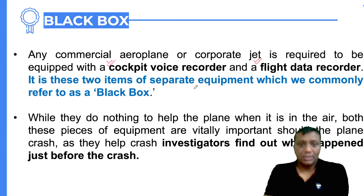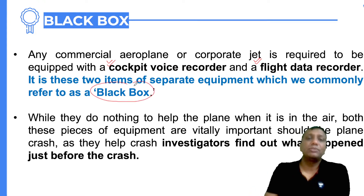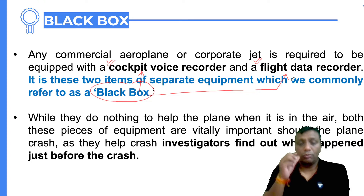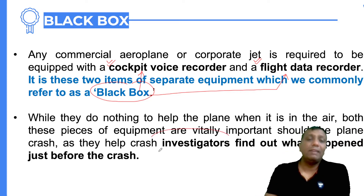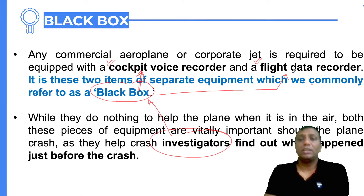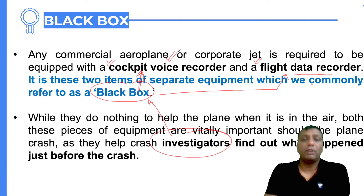The black box consists of two components: the first is the Cockpit Voice Recorder (CVR), and the second is the Flight Data Recorder (FDR). These two items are used separately inside the black box. During a crash, whenever a plane crashes anywhere, investigators try to find this black box.